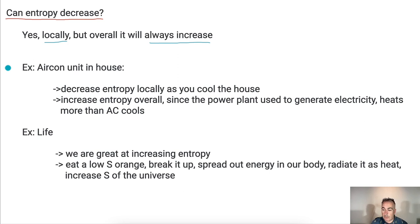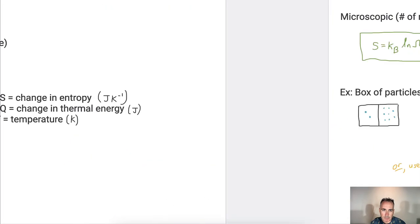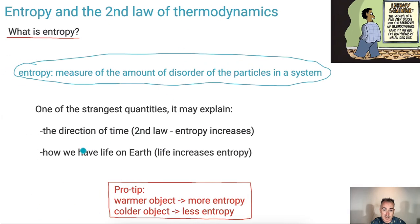Same thing with life. What we do, we take food that's pretty organized. It's pretty low entropy. What do we do? We eat it. We spread it out in our body, we re-emit it as heat, all sorts of ways. Life, we are great at taking entropy, like a low entropy orange. We break it up, spread out the energy, radiate it as heat. So, in other words, we've increased the entropy of the universe. Pretty cool. So entropy might very well be related to why life exists and actually the direction of time, but it's all just about the amount of disorder in the particles in a system.